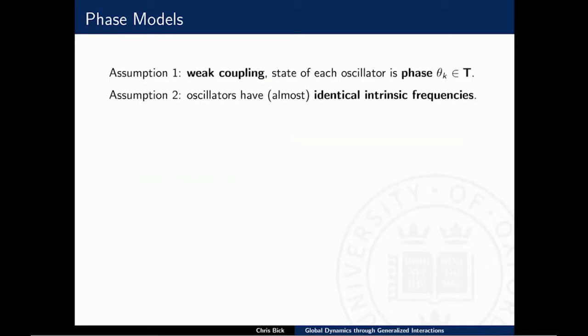There are two assumptions I want to make throughout this talk. The first is the assumption of weak coupling of these oscillatory units, which basically means you can boil down the state of each oscillator to just a phase variable — you parameterize the oscillatory motion by its phase. The second assumption is that the oscillators have identical or almost identical intrinsic frequencies. Most results hold for almost identical frequencies, with some notable exceptions I won't cover today.